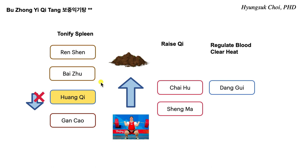These herbs — Renzen, Baiju, and Ganchao — are the fundamental block, and you are changing the formula's personality by changing that empty slot with another module.